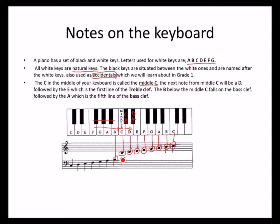Notes above the middle C fall under the treble clef, and notes below the middle C fall on the bass clef. Look at the B sitting on the bass clef — the middle C positions are the same. A is on the last line of the bass clef, G on the last space, F on the fourth line, E inside the space, D on the line, and C on the second space of the bass clef.